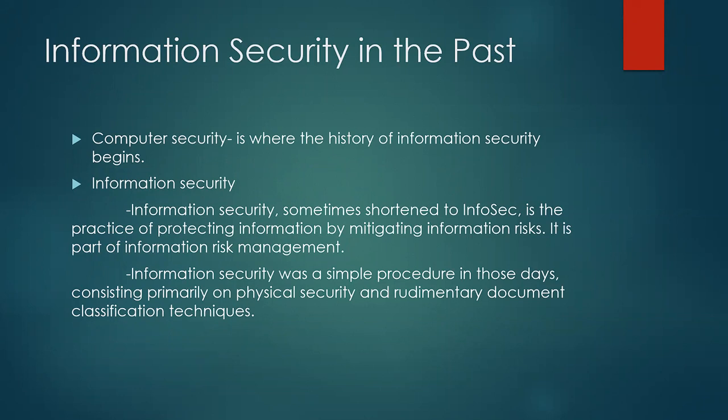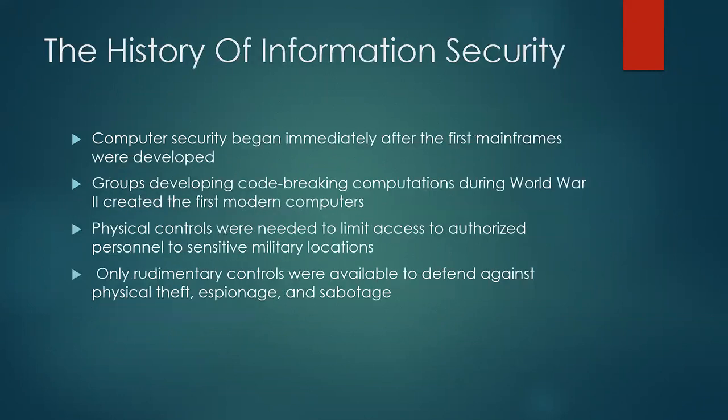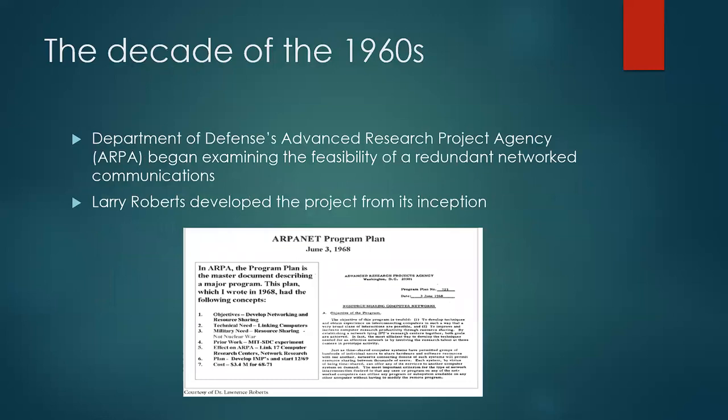Early information security consisted primarily of physical security and rudimentary document classification techniques. The history of computer security began immediately after the first mainframes were developed. Groups developed code-breaking computation during World War II, and physical controls were needed to limit access and authorize personnel to sensitive military information. Rudimentary tools were available to defend against physical theft, espionage, and sabotage.